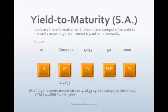Let's compute the yield to maturity using the time value of money function of the financial calculator and enter the data in the following order: 20 N; 1,095 plus and minus PV; 50 payment; 1,000 FV; then press the compute key and I/Y key for TI, or just I for HP.